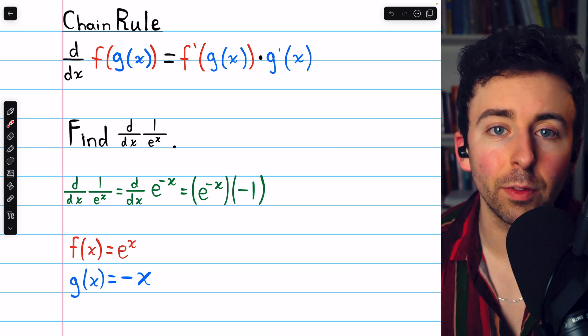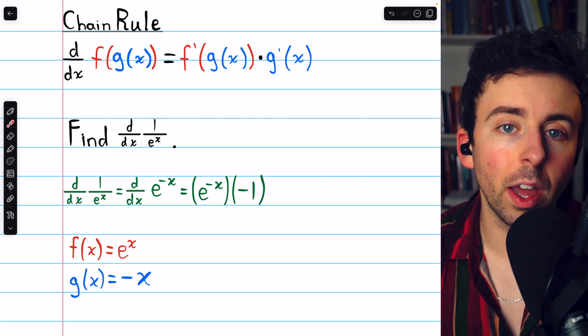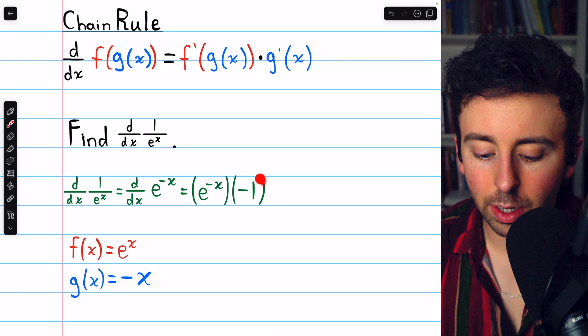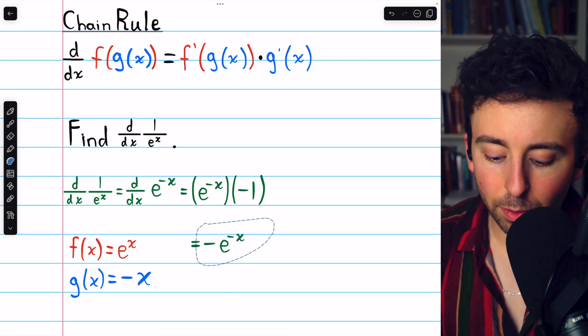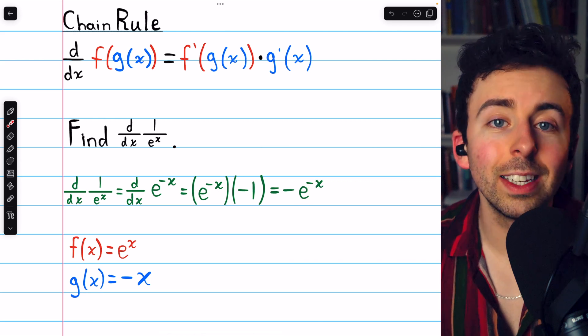We're not going to change that inside function. But then we need to multiply by g prime, the derivative of the inside function. The inside function is negative x, so its derivative is negative 1. Finally, probably prefer to just write it like this. Negative e to the negative x.